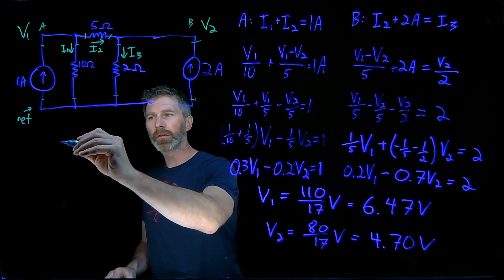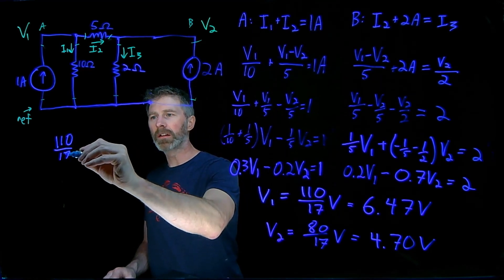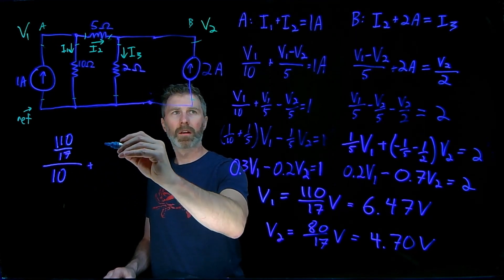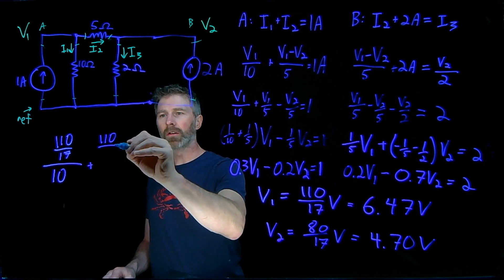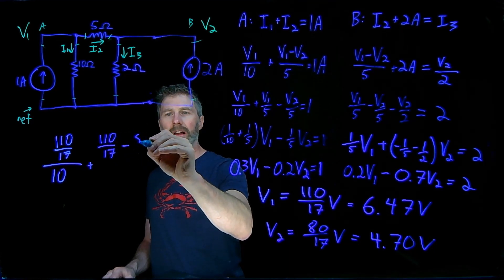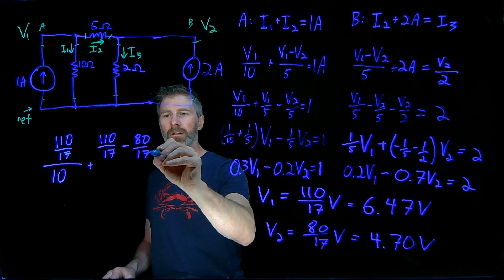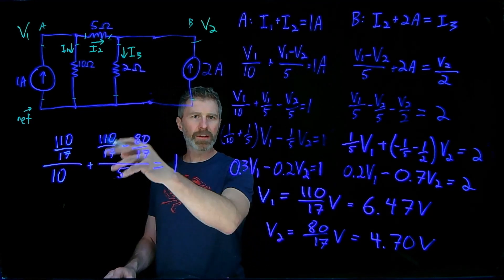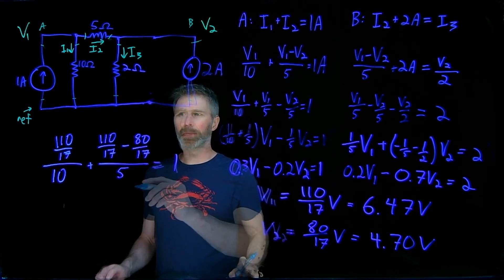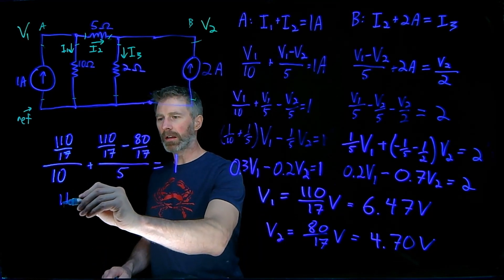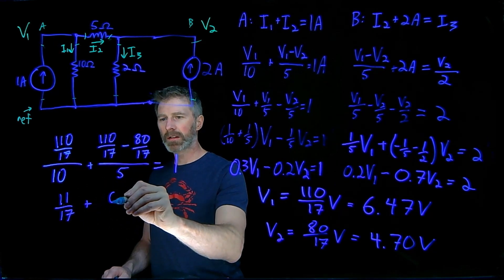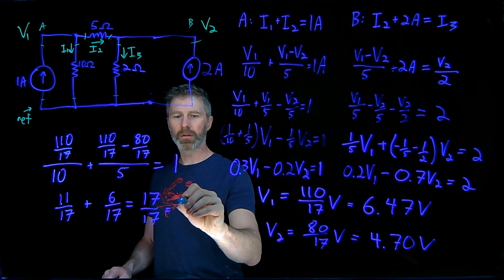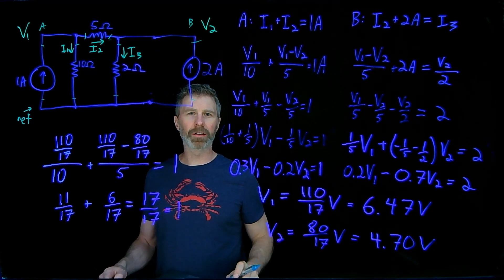For V1, I have 110 over 17, and that's over 10, plus 110 over 17 minus 80 over 17, and that's all over 5 equals 1 amp. So if this holds true, then I know I've done my calculations correctly. What I end up with is 11 over 17 plus 6 over 17, which equals 17 over 17, which is 1. And it looks like I've done my calculations correctly.